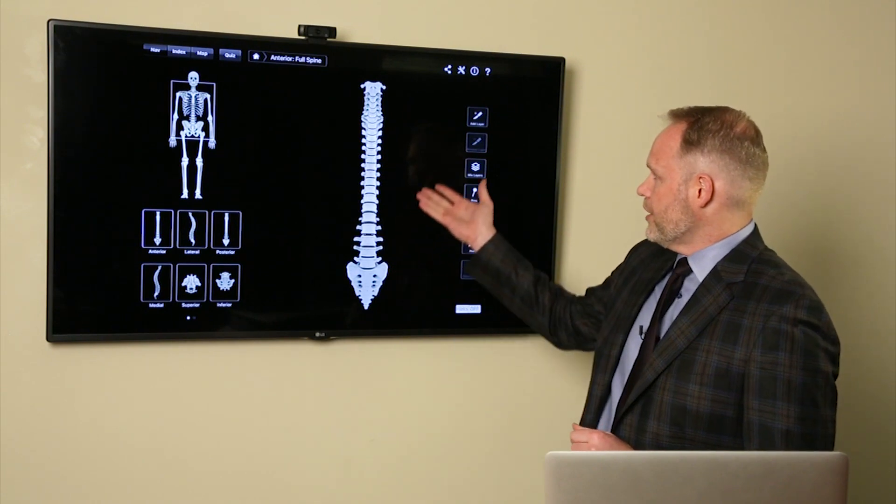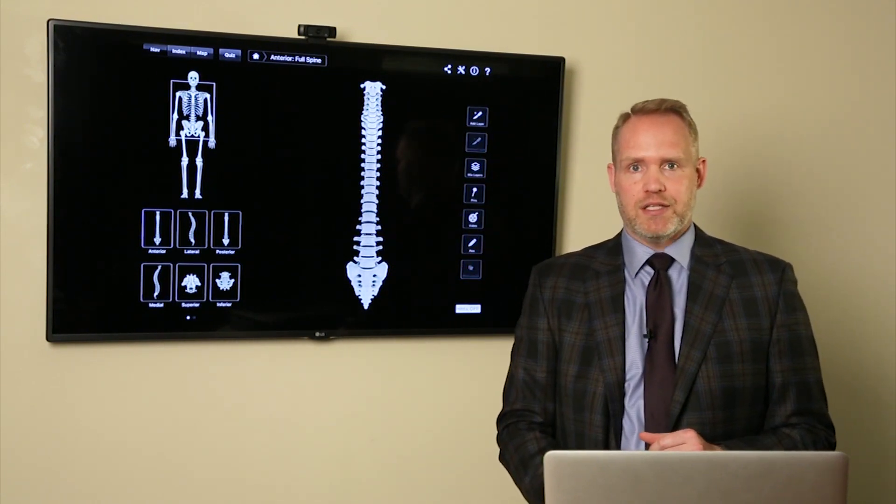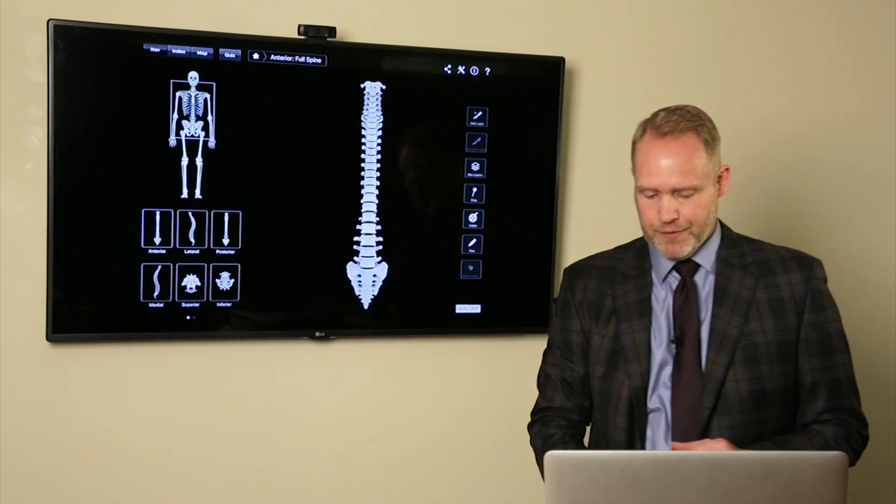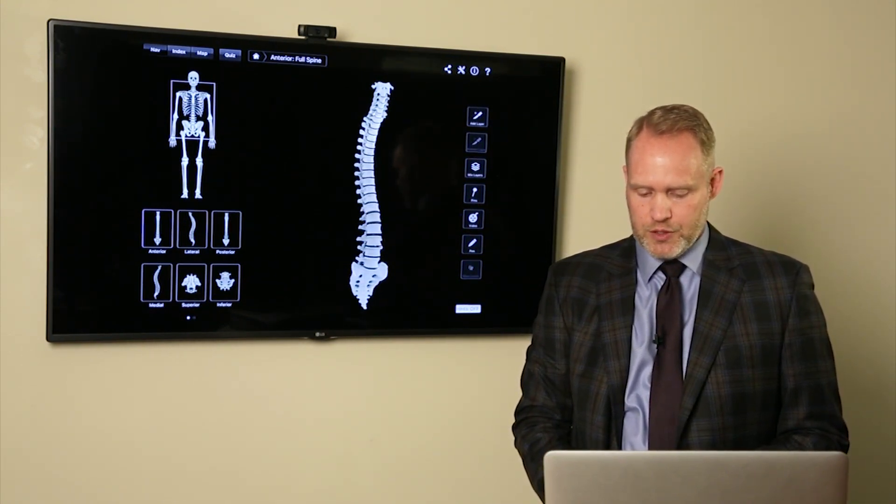So looking at the model here, we have a spine, that's the full spine, head to neck. Your head would be up here, and this is your tailbone all the way down here. This is simply the front view of the spine.